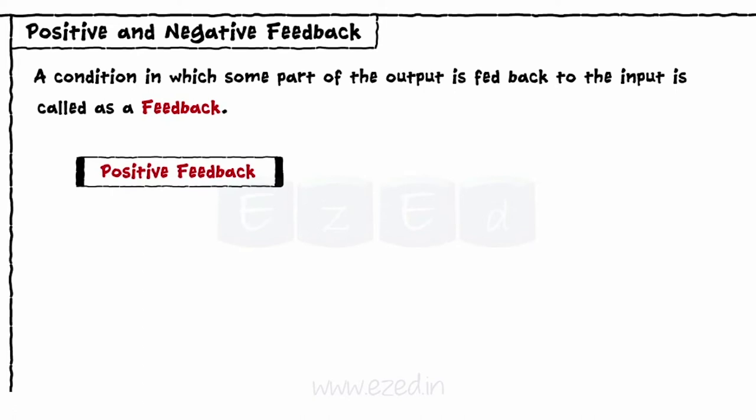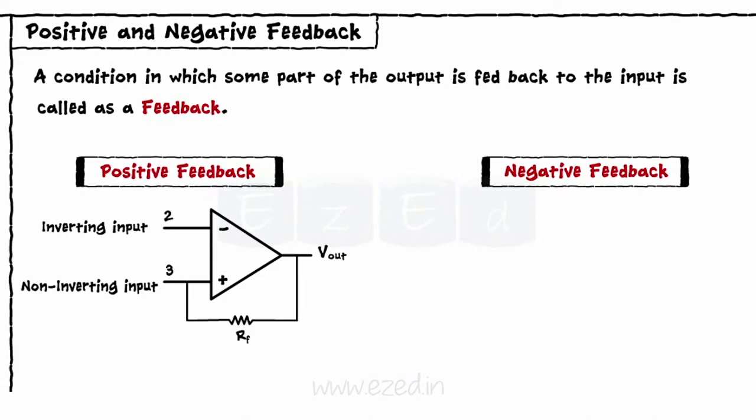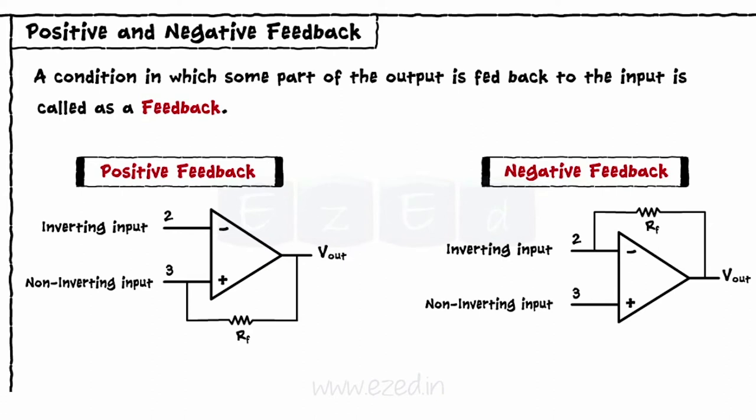In case of an op amp, we have two types of feedbacks: positive feedback and negative feedback. When some part of an output is fed back to a non-inverting terminal of an op amp, it is called positive feedback. And when some part of an output is fed back to the inverting terminal of an op amp, it is called negative feedback.